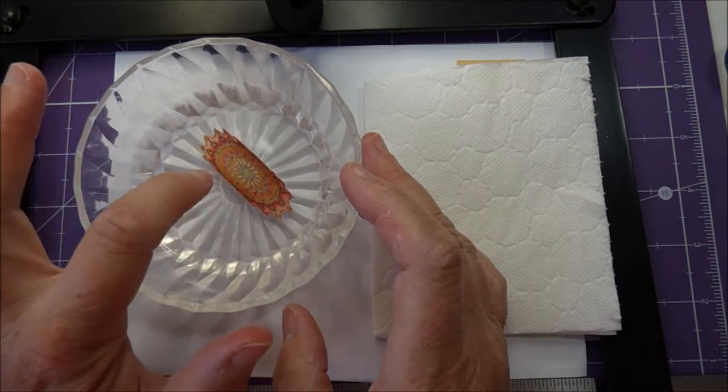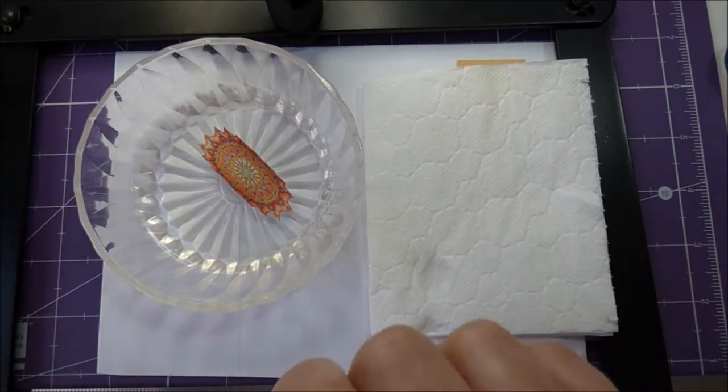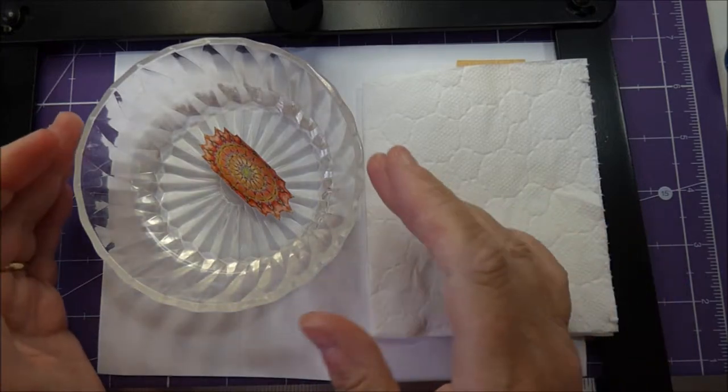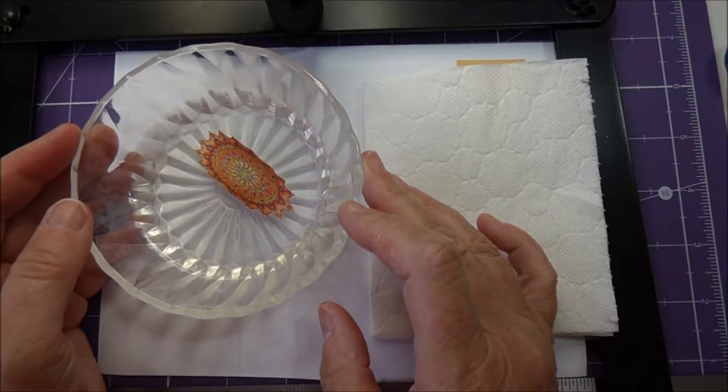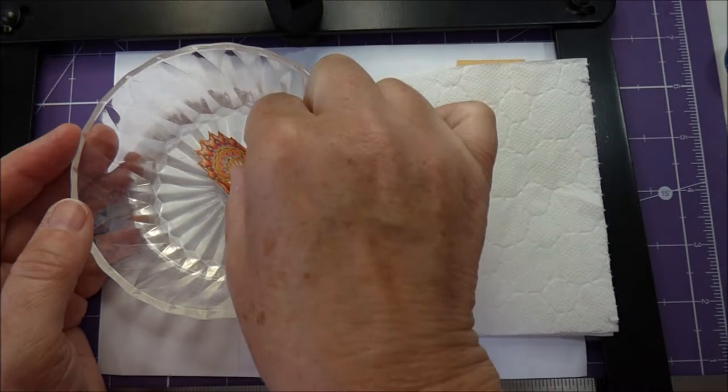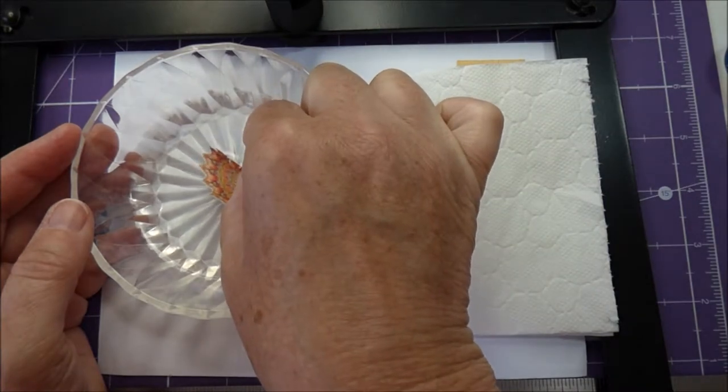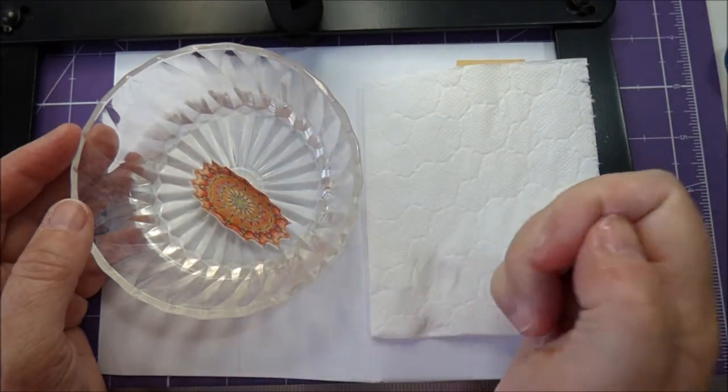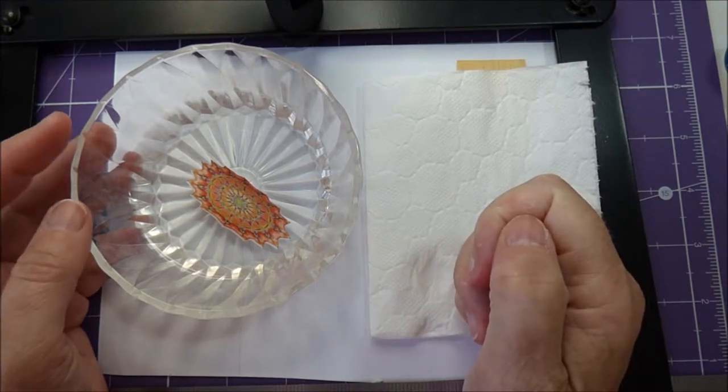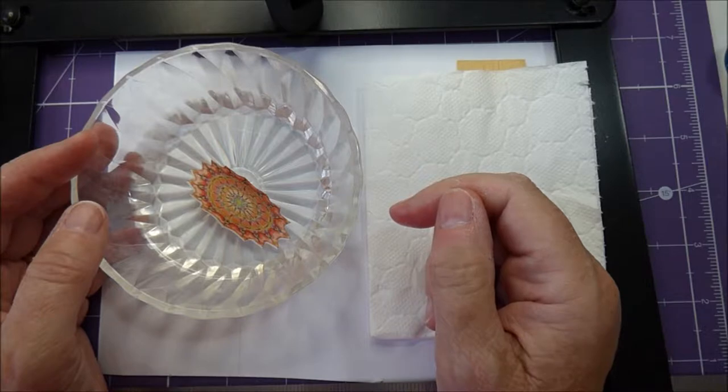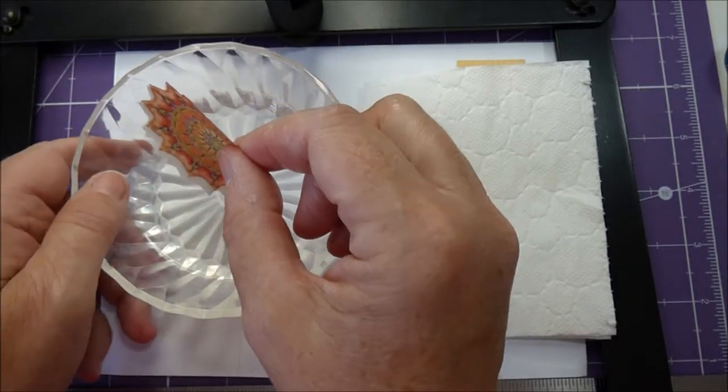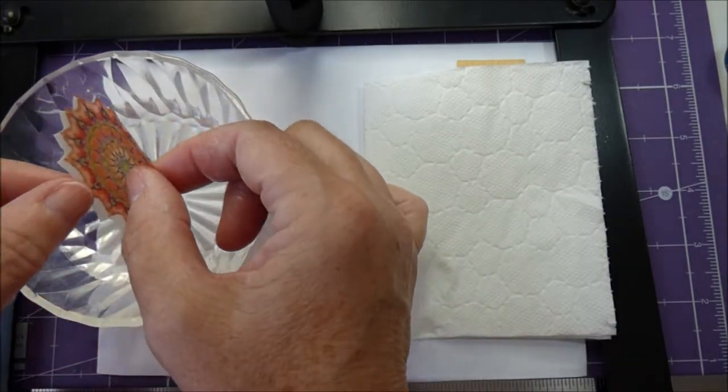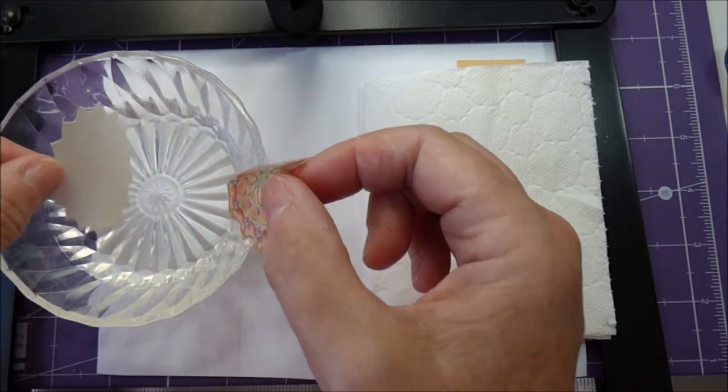You just need to be a little bit patient. When it's ready, it will just slide off really easily. Just try, no, it's not quite ready yet. Leave it for a minute more. Now you can see it will just separate easily from the backing paper.